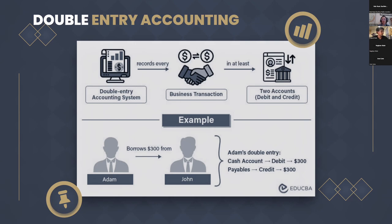Why is this important? Accuracy and completeness help prevent errors and ensure financial statements are accurate. It's also very important for financial transparency — by tracking both sides of a transaction, businesses can provide clearer financial information. This is very useful for decision-making both inside and outside the company, including for investors and stakeholders.